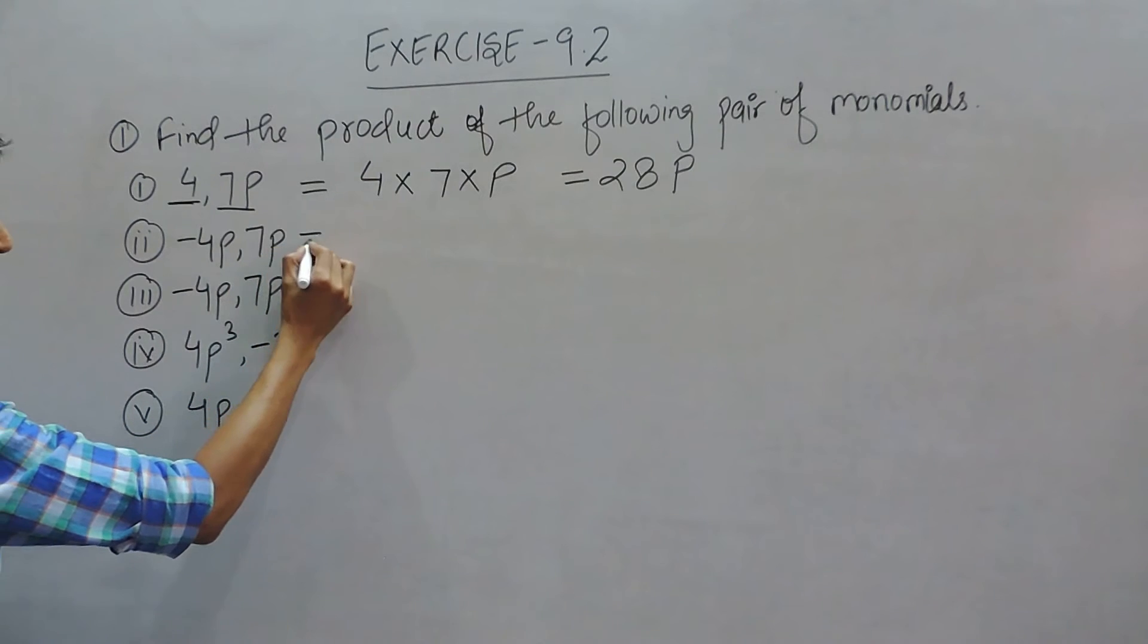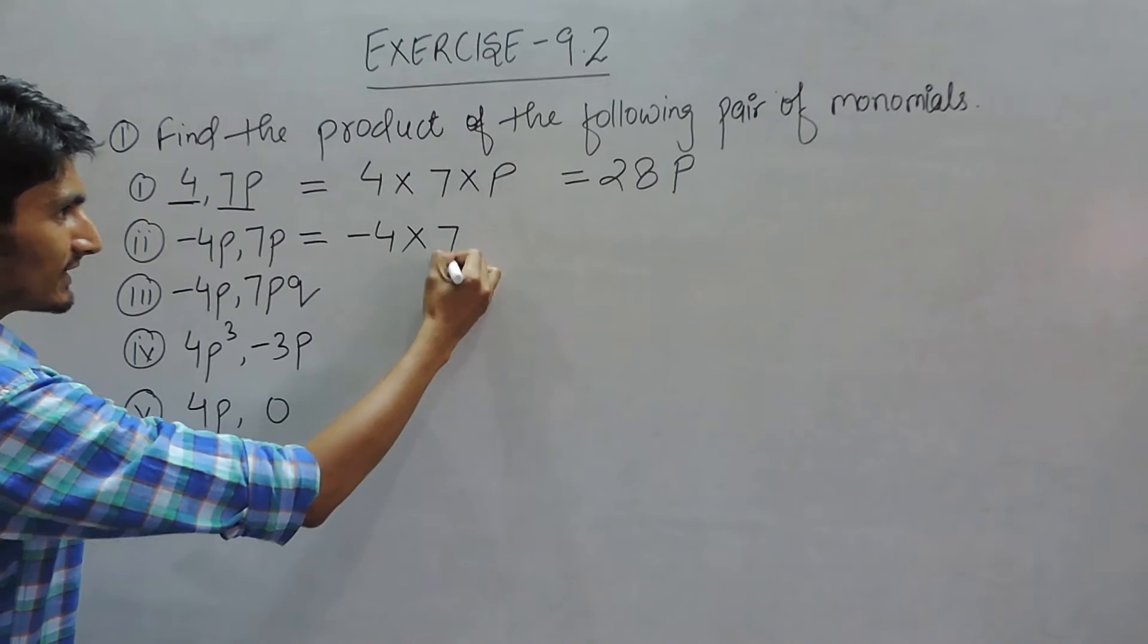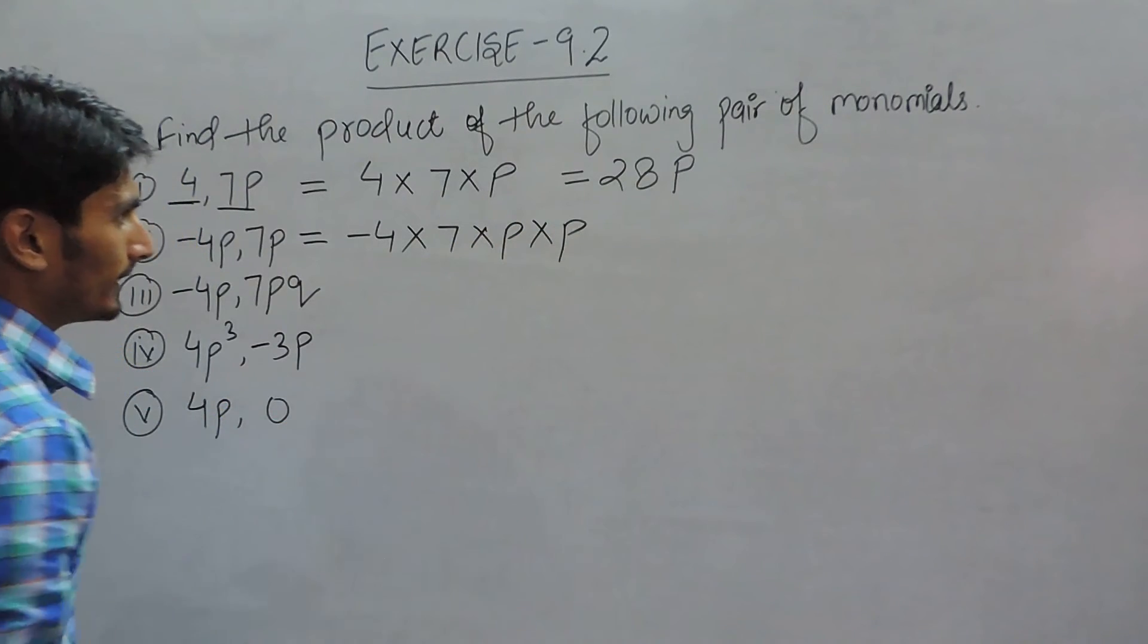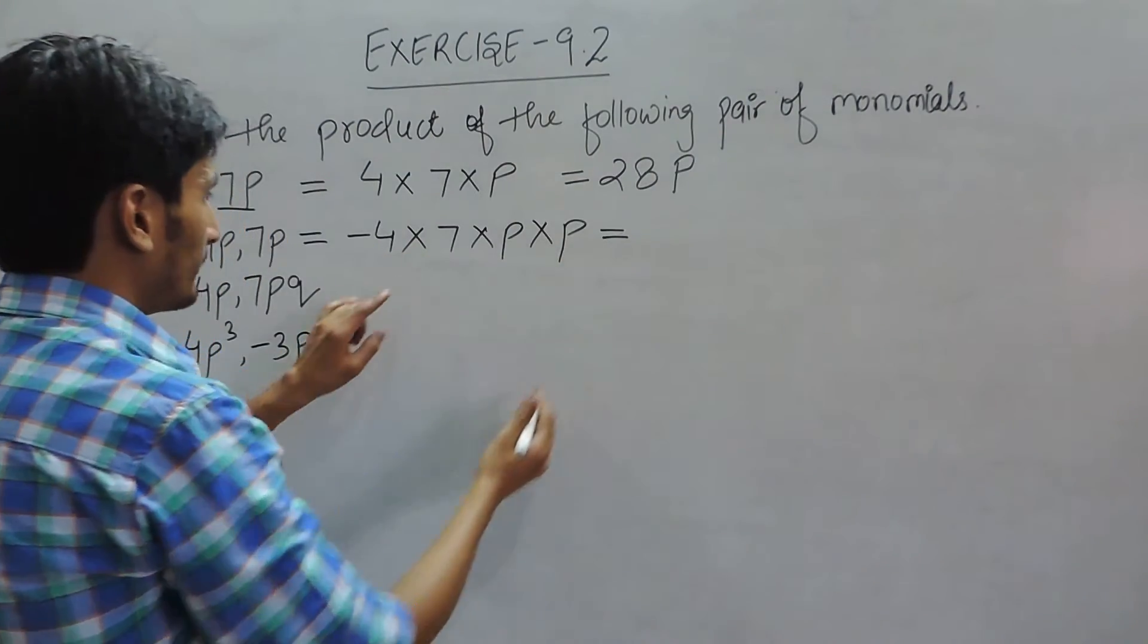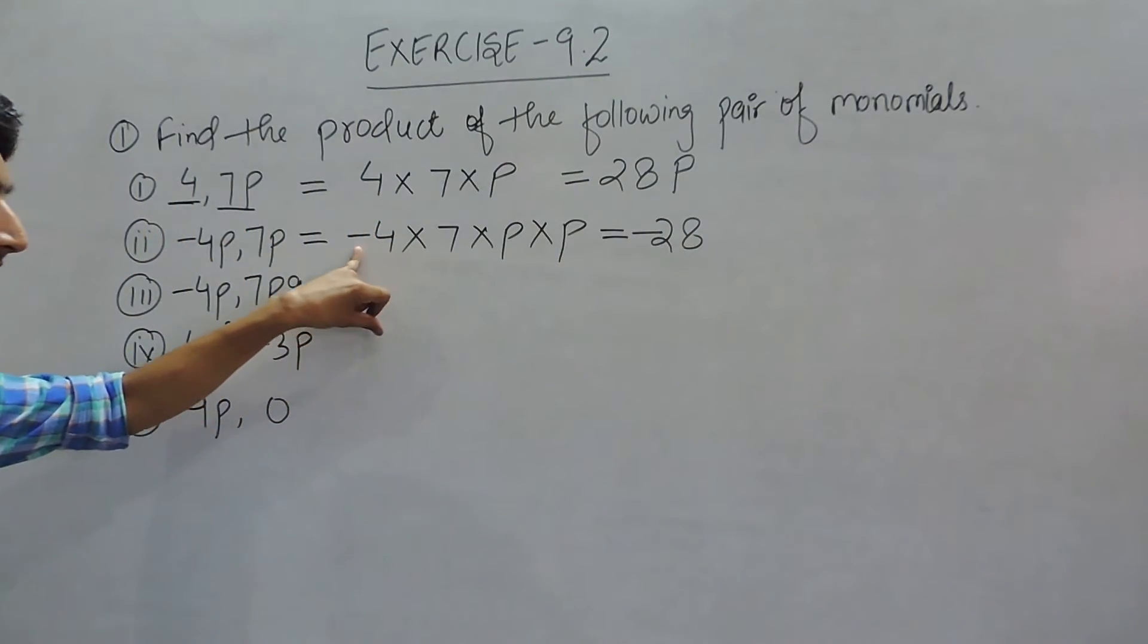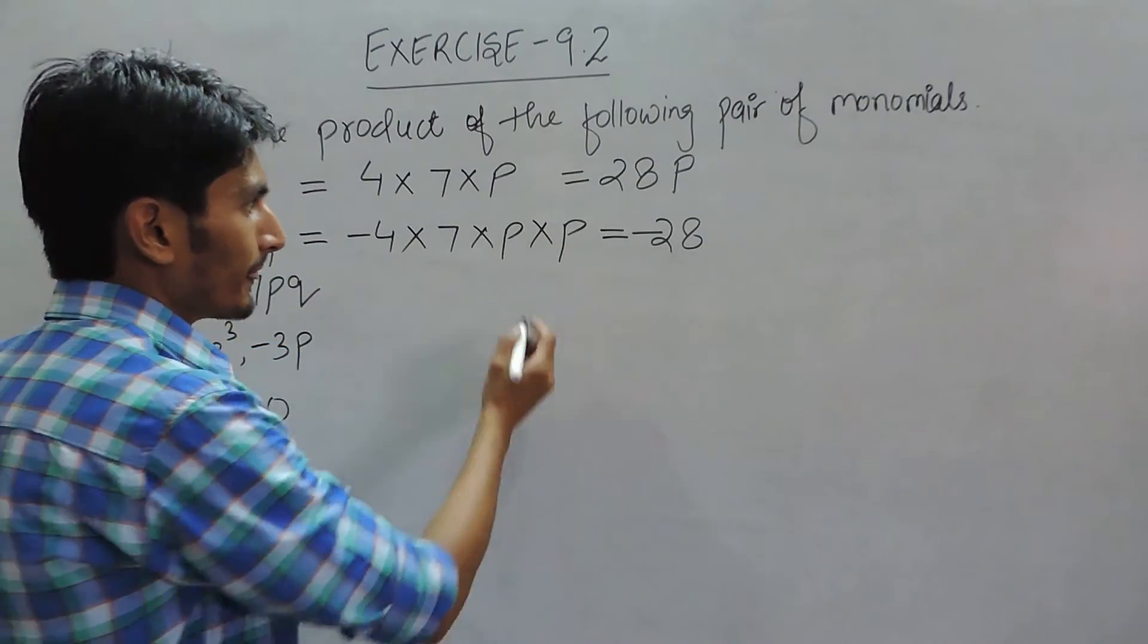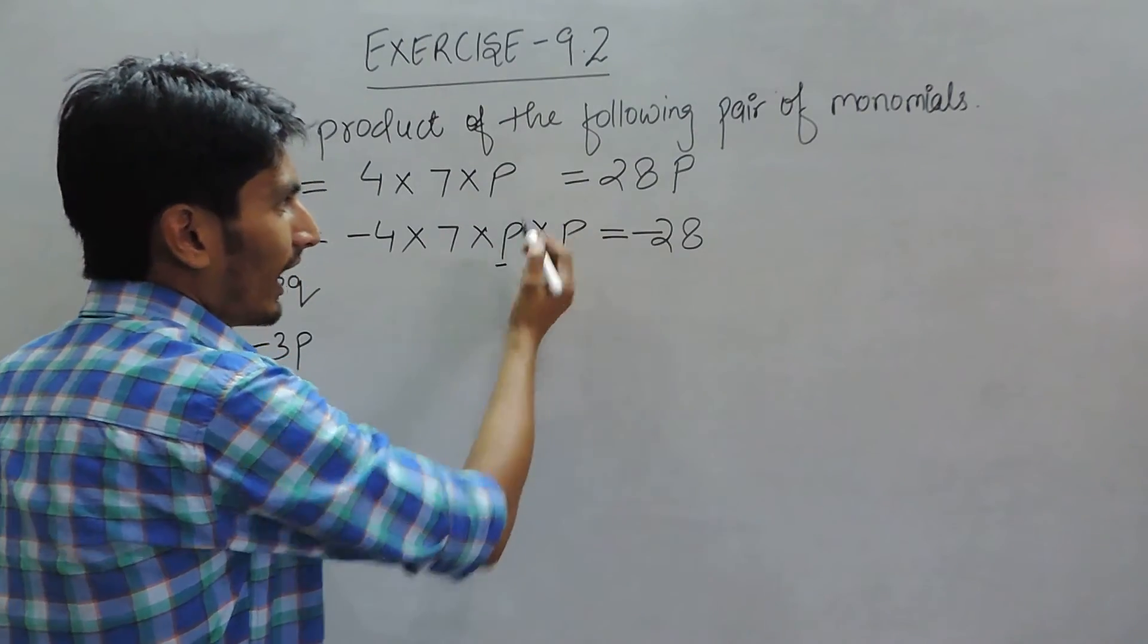Second question: again you have to multiply -4 multiplied by 7, multiplied by P, multiplied by P again. When multiplied, 4 times 7 will give 28 negative because one sign is negative. When P is multiplied by P, when you multiply the variables, their powers are added.